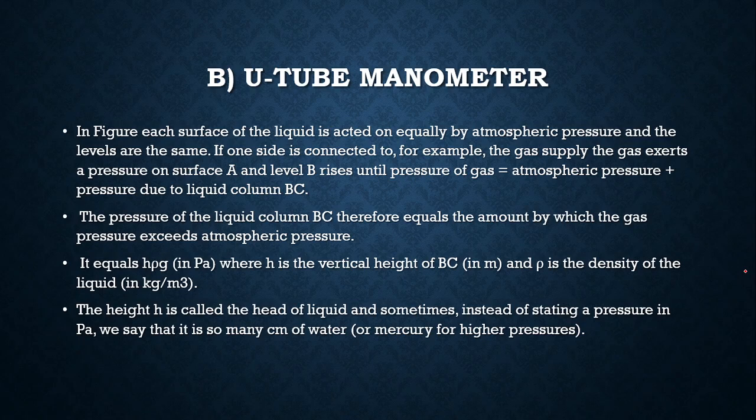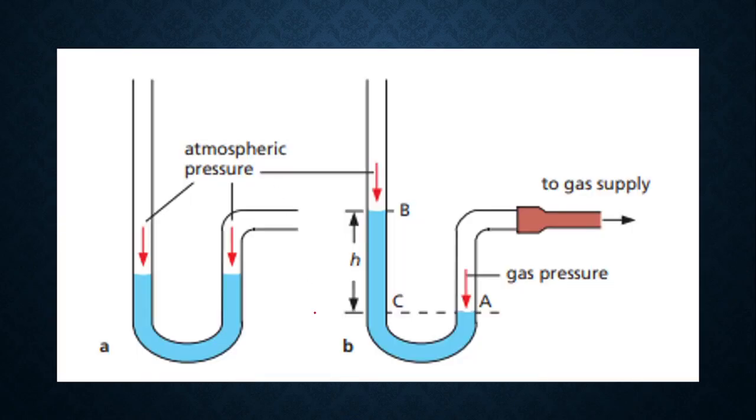Now we're talking about the U-tube manometer. Initially they both are at the same level because they are both open to atmospheric pressure. We don't care if this is curved from this side or if this is straight. What we care about is the height and that is the same. That is because from this side and from this side it's open to the same environment - it is open to atmospheric pressure.